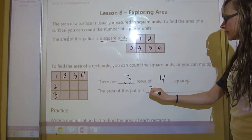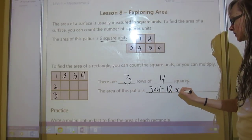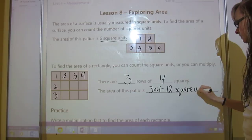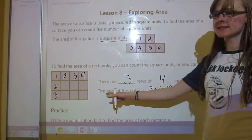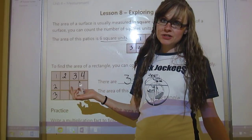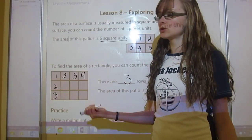So we're going to write that three times four equals 12 square units. Okay, so that's what this would be. Or you could just count them all out: one, two, three, four, five, six, seven, eight, nine, 10, 11, 12.